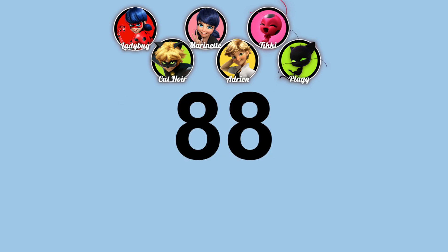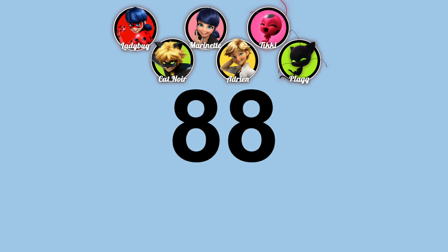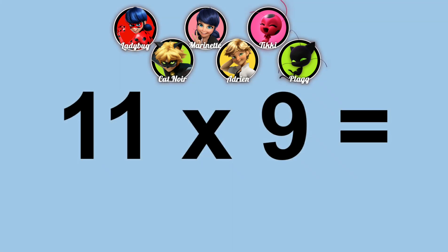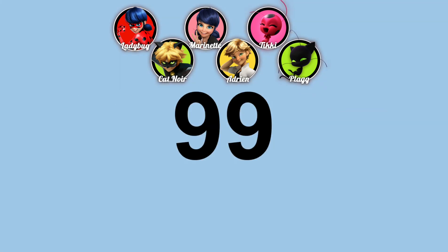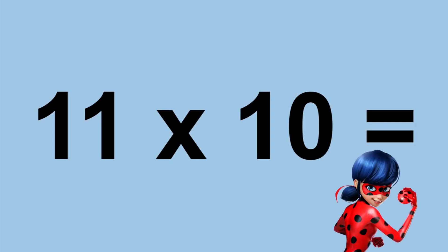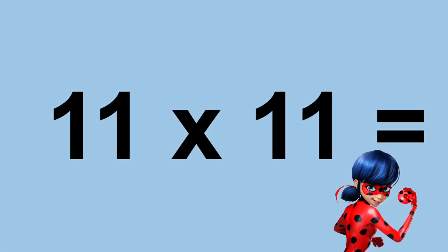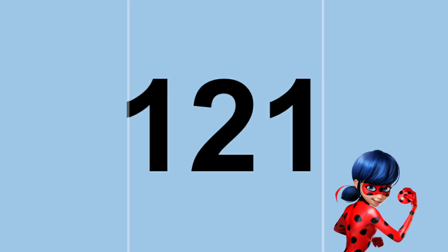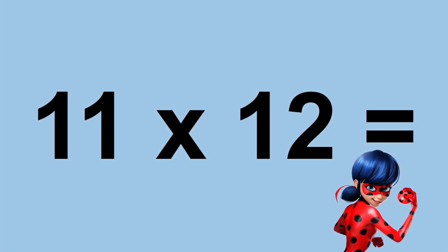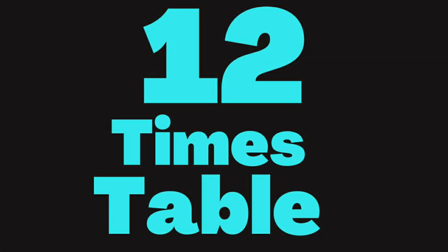Eleven times eight equals eighty-eight. Eleven times nine equals ninety-nine. Eleven times ten equals one hundred and ten. Eleven times eleven equals one hundred and twenty-one. Eleven times twelve equals one hundred and thirty-two.